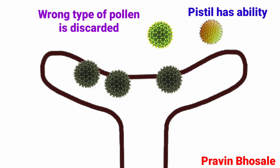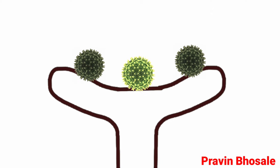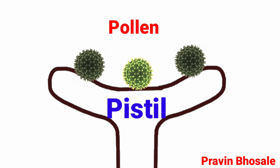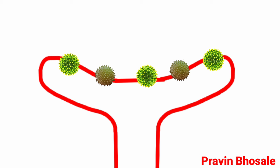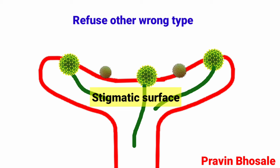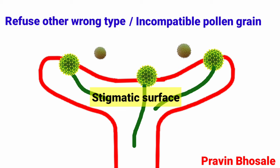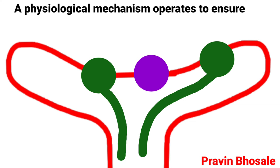Thus, the wrong type of pollen is discarded by the pistil. Compatibility and incompatibility of the pollen-pistil is determined by special proteins. This process involves pollen recognition followed by promotion or inhibition of pollen. The stigmatic surface of the flower refuses other wrong type or incompatible pollen grains. A physiological mechanism operates to ensure that only intraspecific pollen germinate successfully, meaning pollens belonging to the same species.